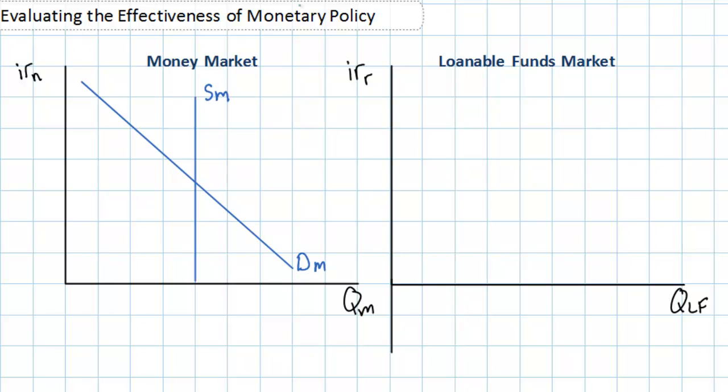In the market for loanable funds, the demand for investment in the private sector is downward sloping. The demand for investment curve reflects an inverse relationship between the real interest rate and the quantity of investment demanded. This was explained in our previous video on the crowding out effect, where the loanable funds market is covered in great detail. If you want to learn more about the demand and supply of loanable funds, go back and watch the video on the crowding out effect in our unit on fiscal policy.